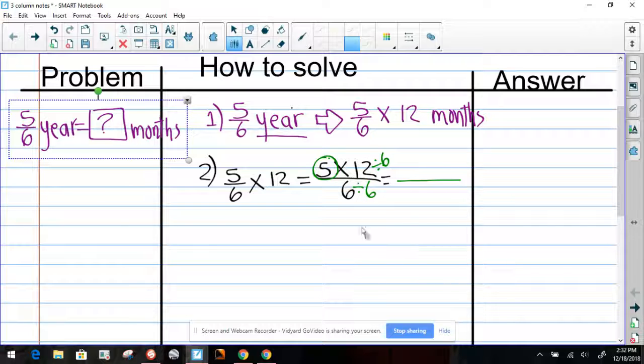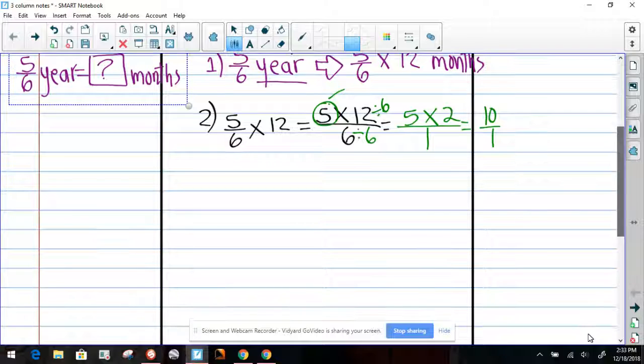So now let's rewrite this. Five is the number that has not been utilized. And 12 divided by six equals two. Six divided by six equals one. So now we know that five times two equals ten over one. That is beautiful. Did you see how that worked? That is just magical.